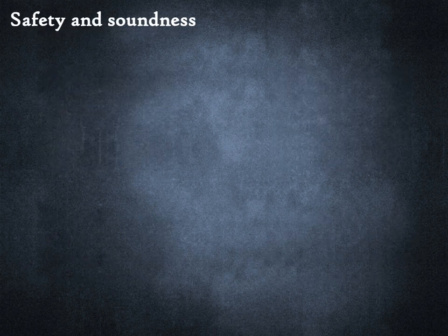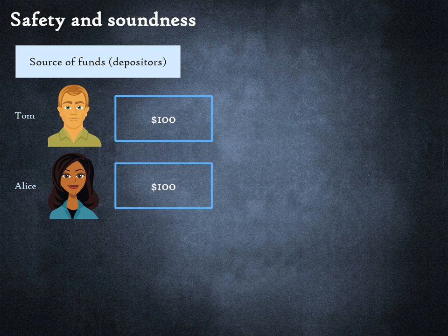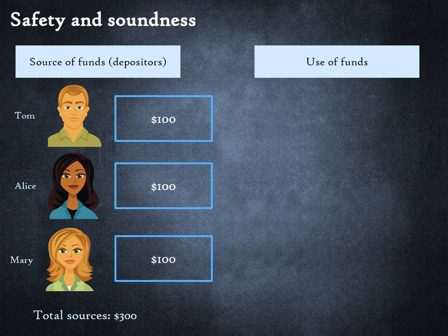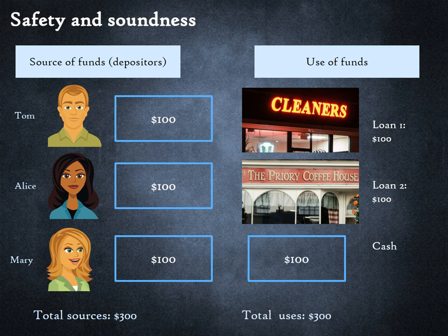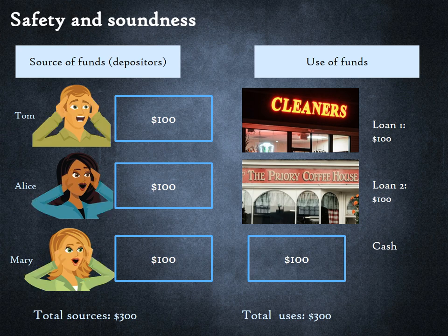To understand the rationale for safety and soundness regulation, consider a bank that sources deposits of $100 each from three depositors: Tom, Alice, and Mary. It deploys the funds raised by making loans of $100 each to two borrowers, a dry cleaner and a restaurant. It keeps cash of $100. Now Mary comes to the bank to withdraw her deposit — so far so good. But what if Tom, Alice, and Mary all come to withdraw their deposits at the same time? The bank is out of money then.